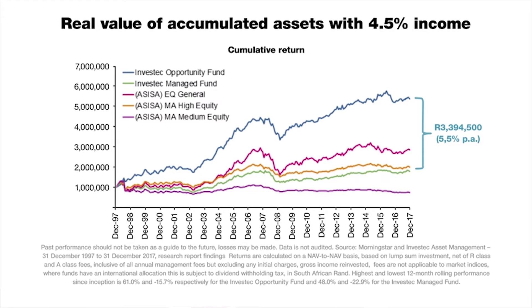However, putting these investment options inside a living annuity changes the picture dramatically, because the force of volatility starts working against you. A one million Rand living annuity modeled over the same 20-year period with a 4.5% income shows the Managed Fund portfolio finishing at a lower value than the sector average portfolio — despite Managed Fund having beaten the sector average by 1% per annum. This is a classic example of how higher volatility erodes outperformance. For a capital growth investor, Managed Fund was an excellent option; but for an income investor, the sector average delivered a better outcome.